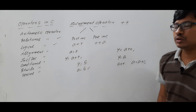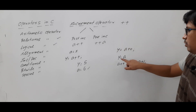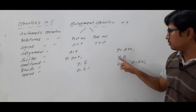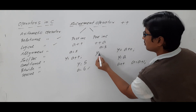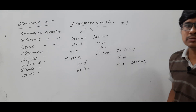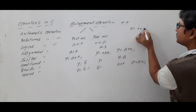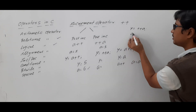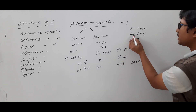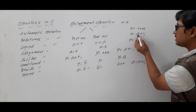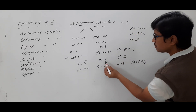Let me discuss again: y is equal to a plus plus. As it is a post increment, assignment happens first — y is equal to a — so y gets the value 5, then the increment happens and a gets value 6. Now suppose you are performing pre increment: you write y is equal to plus plus a. As it is pre increment, first you perform the increment, so a becomes 6, and then that updated value is assigned to y, so y also gets the value 6.